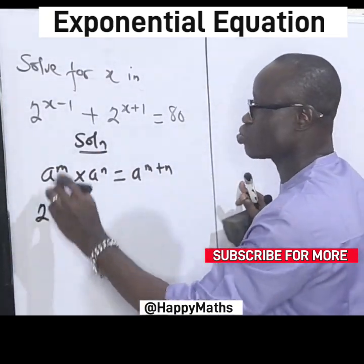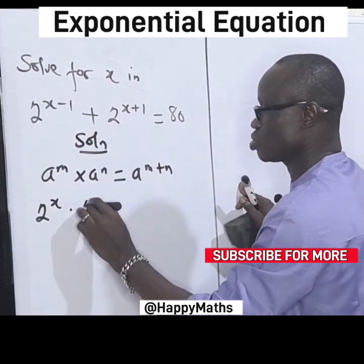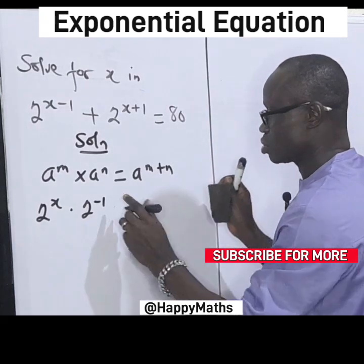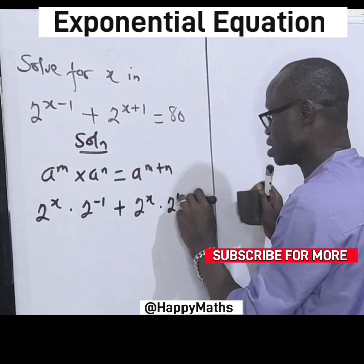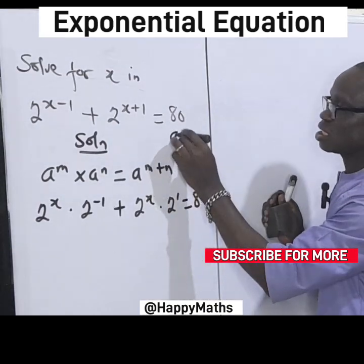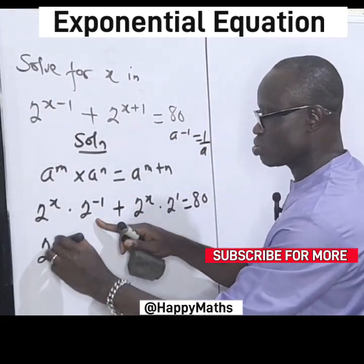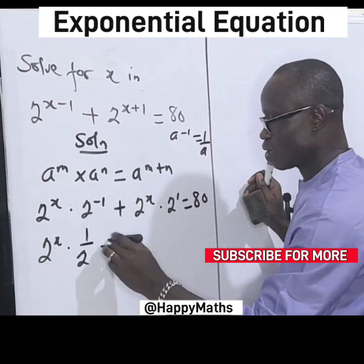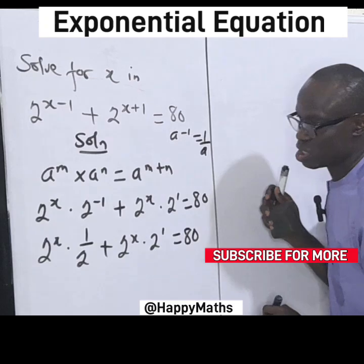Let's take it to this form. We have it as 2 raised to the power of s times 2 raised by minus 1, plus 2 raised by s times 2 raised by 1, equal to 80. Recall that a^(-1) is the same as 1 over a, so let's take this to a fractional value: 2 raised by s dot 1 over 2, plus 2 raised by s dot 2 raised by 1, equal to 80.